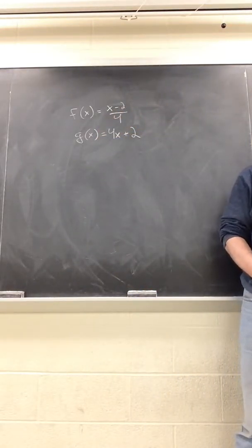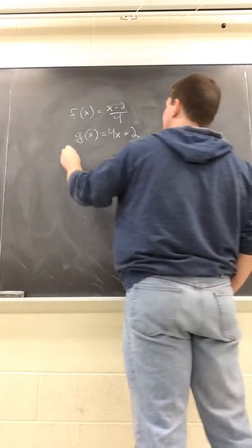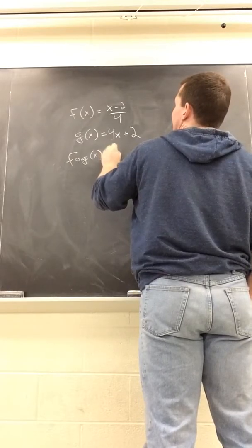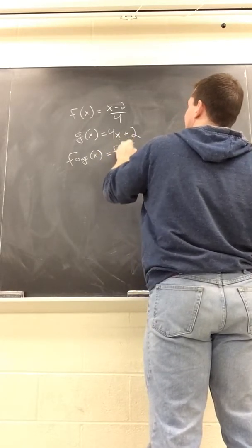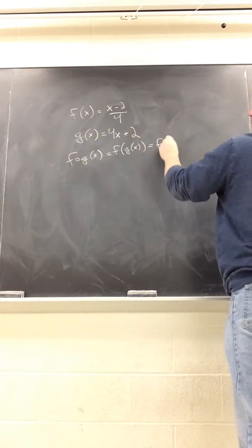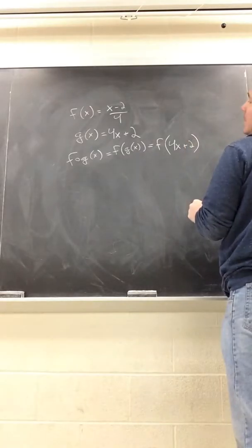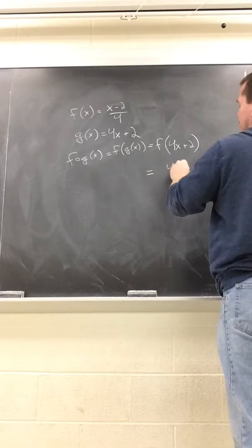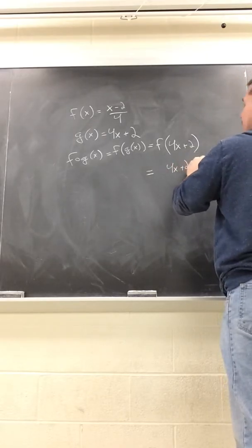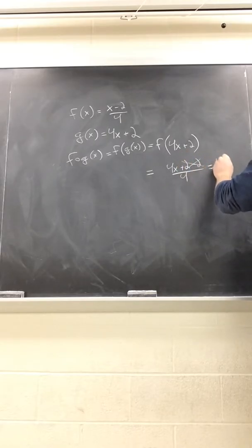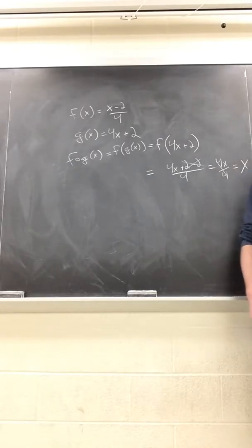We want to do the composition on those. If we do f circle g of x, we get f of g of x, which by definition is f of 4x plus 2. Now take f of that. F takes whatever you plug in, subtracts 2 from it, and then divides it by 4. If we do that, 2 minus 2 cancels, we get 4x over 4, the 4s cancel, and we just get x.